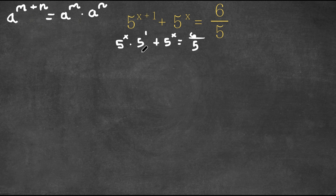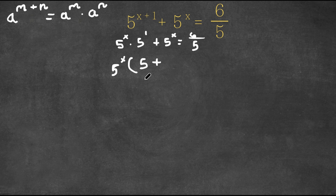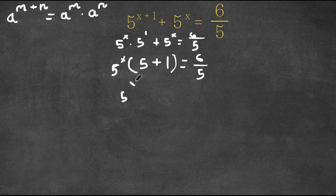Now because both of these terms have 5 to the power of x, I'm going to factor out 5 to the power of x from the left hand side. So we have 5 to the power of x times the quantity 5 plus 1, which gives us 5 to the power of x times 6, and this is equal to 6 over 5.